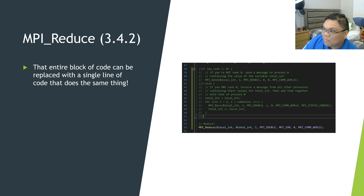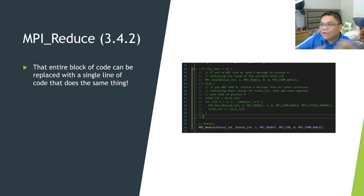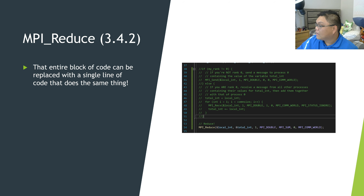With the knowledge of the reduce function, we can replace all that block of code — where processes send their values to process zero — with one single line of code. We went through all the trouble of defining those blocks just to establish a baseline of what these programs are doing. When programming scalable MPI programs, we probably don't want to write all that manually.